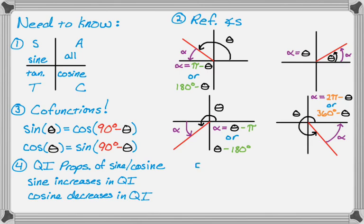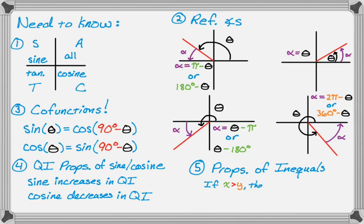The fifth thing we need is properties of inequalities. If x is greater than y, then negative x is less than negative y — so multiplying or dividing by a negative flips the inequality. A second property: if x is greater than y, then 1 over x is less than 1 over y — so taking reciprocals also switches the inequality sign.